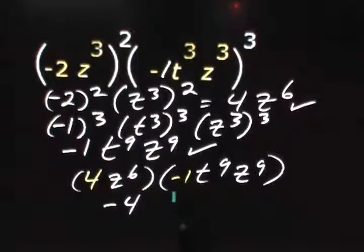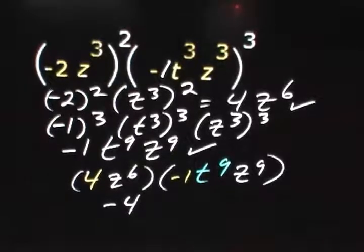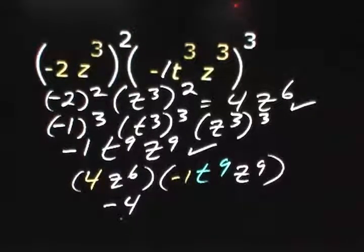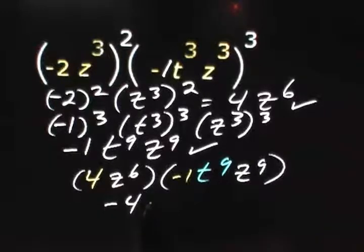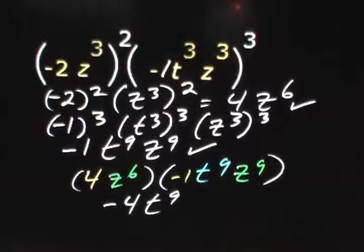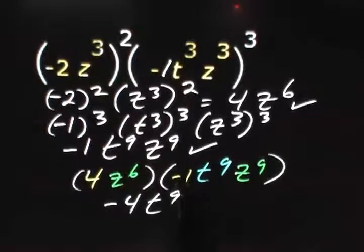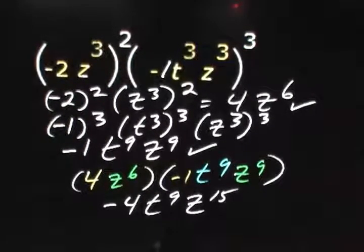I'll then work with the t term. We only have one t term — that's t to the ninth. I work with the t term first because we need to enter our variables in alphabetical order, and t comes before z. Finally, we multiply our z terms: z to the sixth times z to the ninth gives us z to the fifteenth, since when we multiply powers we add the exponents, and 6 plus 9 is 15.